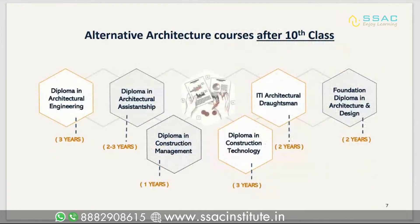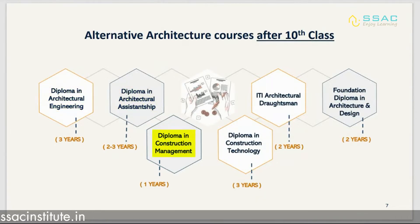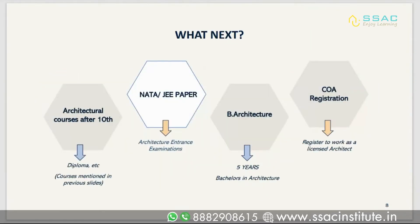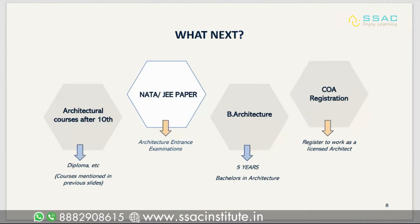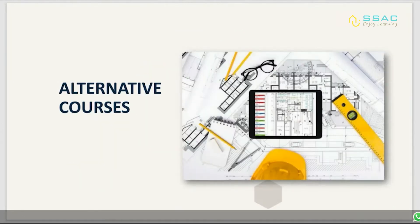There are alternative architecture courses after 10th: Diploma in Architectural Engineering, Diploma in Architectural Assistantship, Construction Management, Construction Technology, Architectural Craftsman, and Foundation Diploma in Architecture and Design. These diploma courses range from one to three years. After completing your diploma, you can prepare for entrance examinations, continue pursuing a B.Arch degree of five years, and then register with COA to work as a licensed architect.